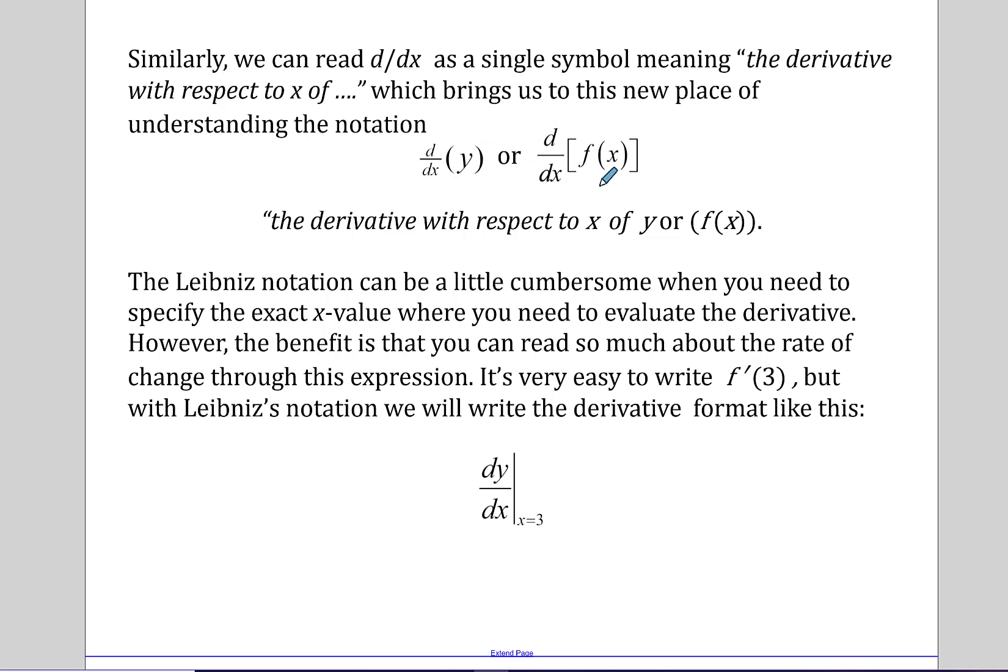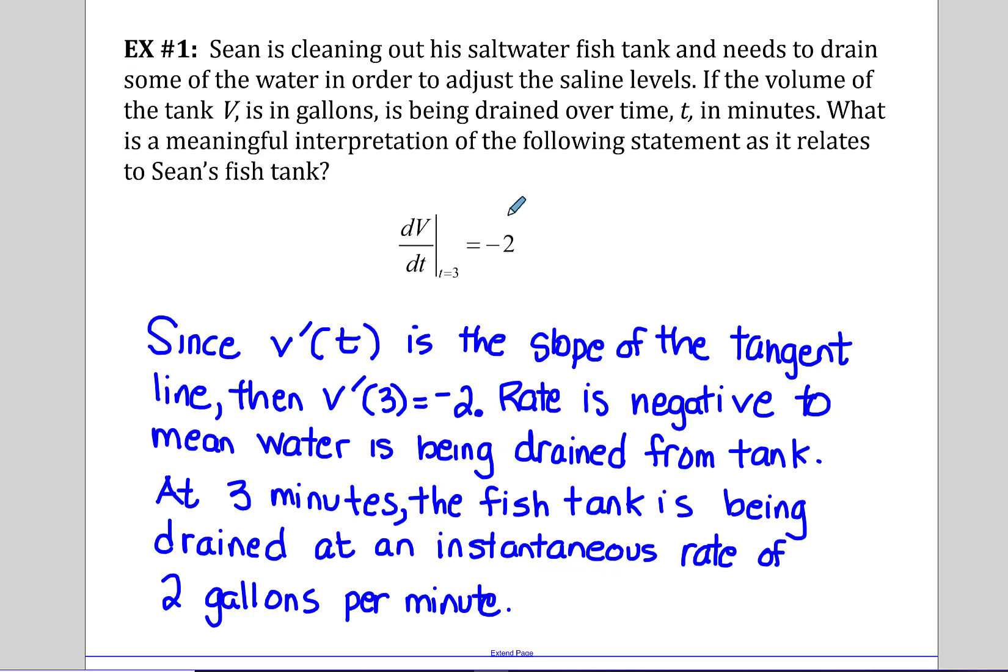Or the derivative with respect to x of f of x. That Leibniz notation can be a little cumbersome when you need to specify the exact x value where you need to evaluate, but the benefit is that you can read so much about the rate of change through this expression. That's really important in our course. It's very easy to write f prime of three, but with Leibniz notation we're going to write the derivative format like this, because that's telling me my function's name is y, my independent variable is x, and I want to find the rate of change when x is three. So the Leibniz notation really gives us a great glimpse of information.